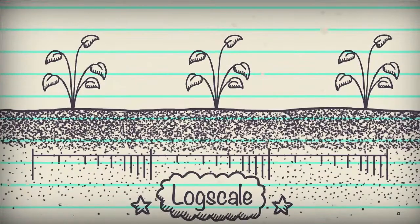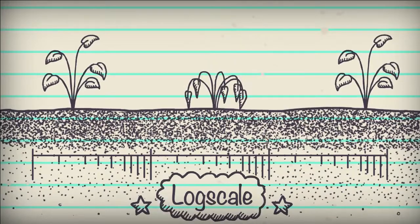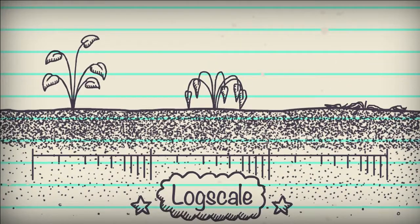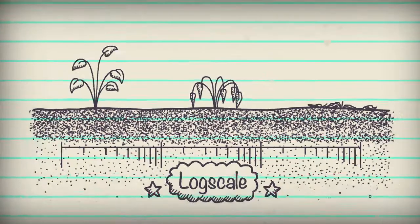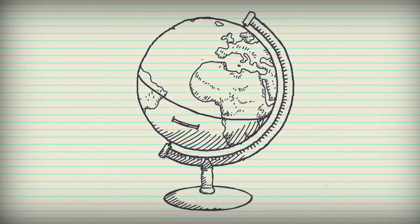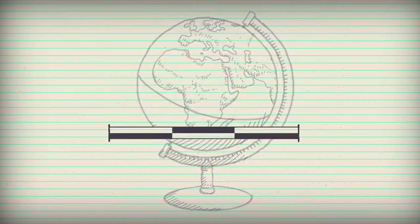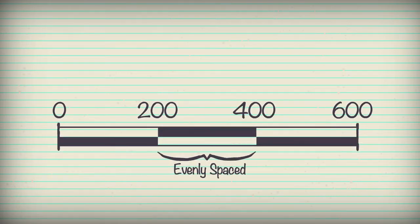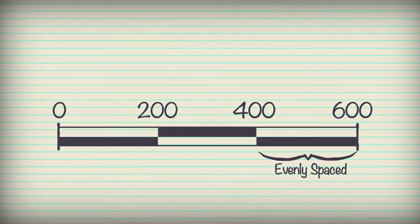Soil science uses the logarithmic scale to predict how much water is available to plants. Let's start with the scale you're familiar with, a linear scale, like the one used to measure distance on a globe. The notches on a linear scale are evenly spaced.